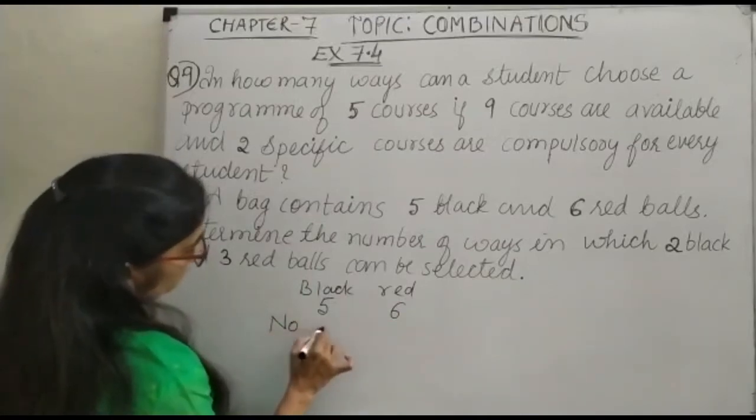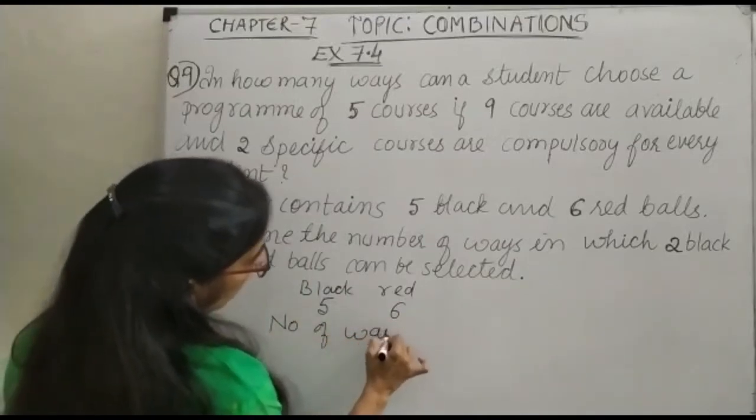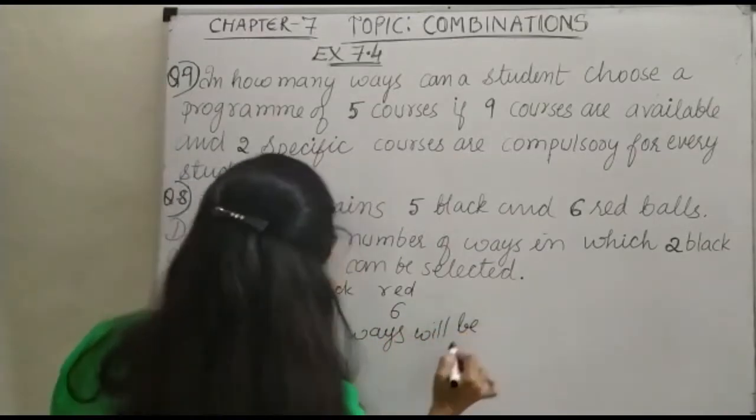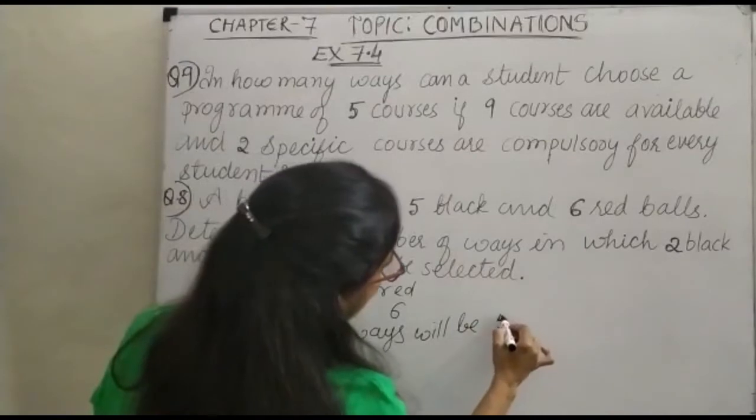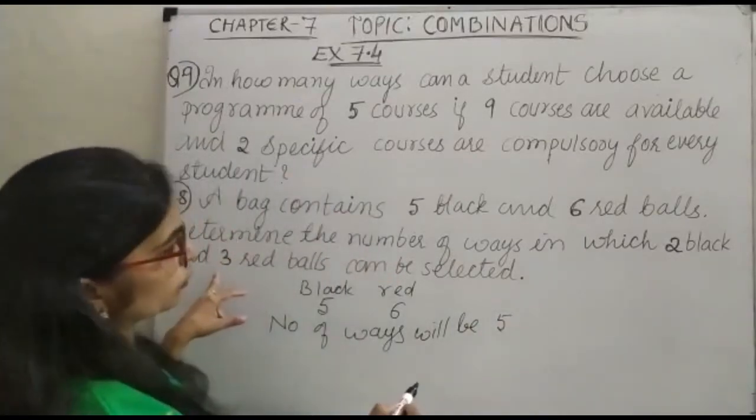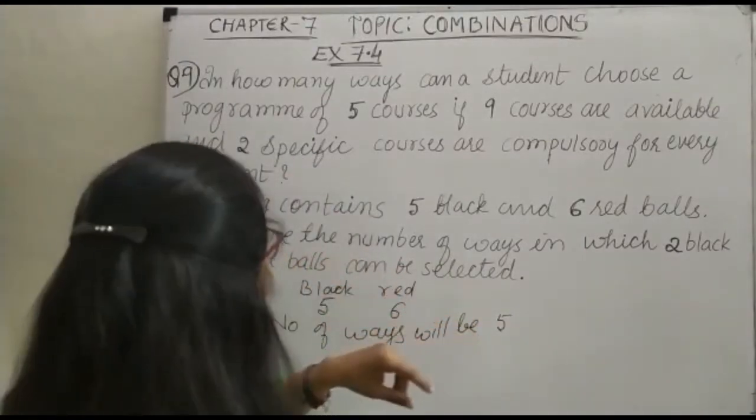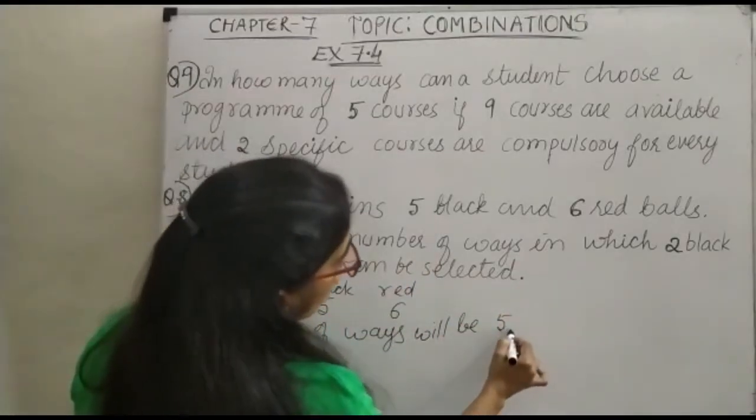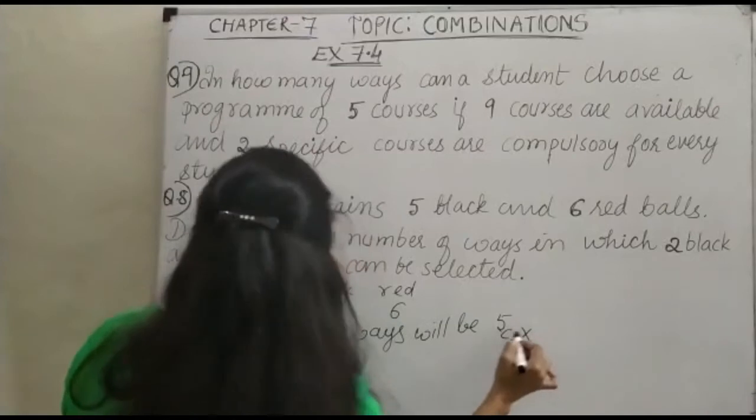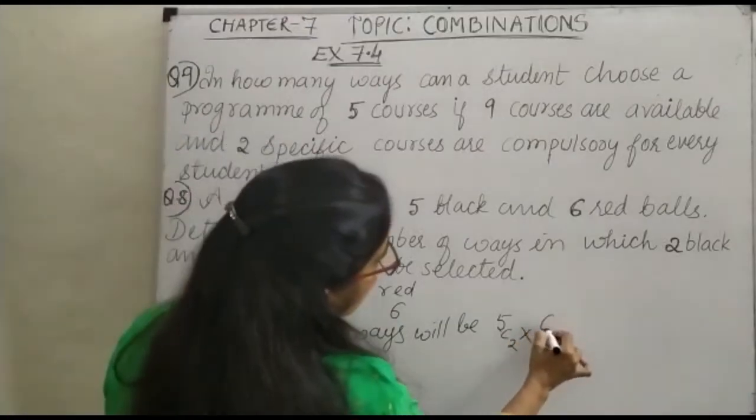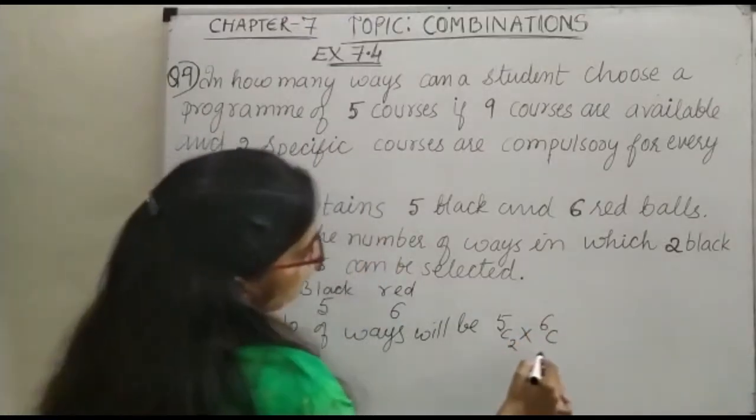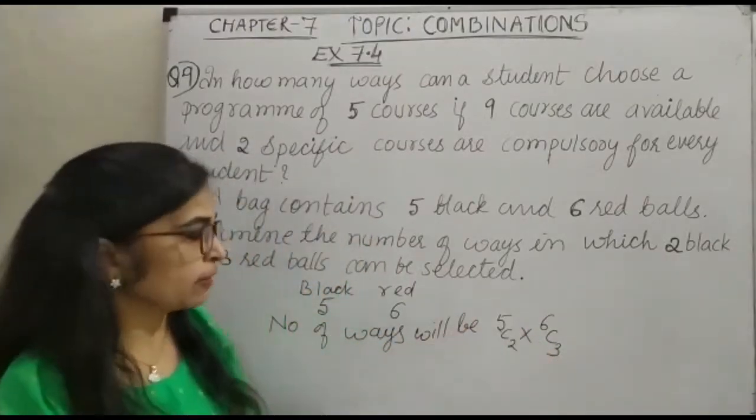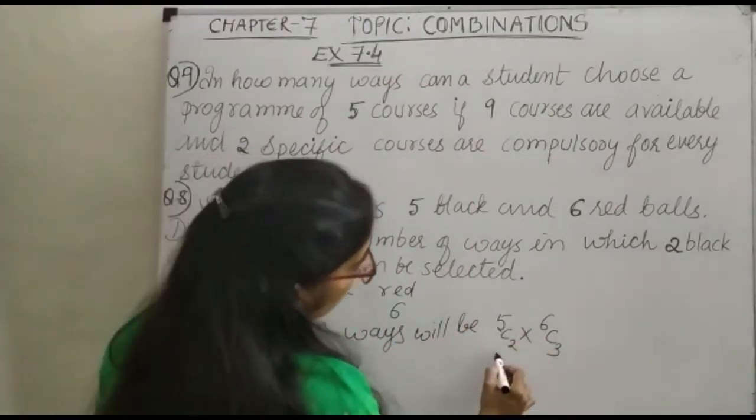So number of ways will be... you need 3 red balls and 2 black balls. So out of 5 black balls we can select 2: 5C2 into 6C3. You know it is a very simple question. Simply we can just use the formula.